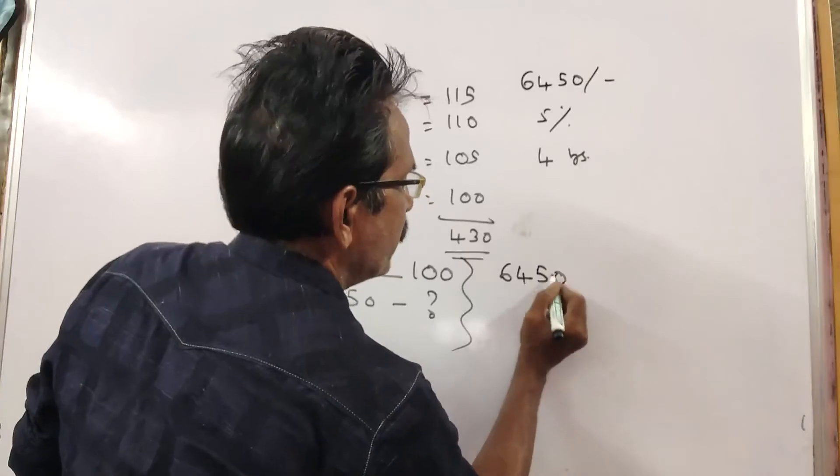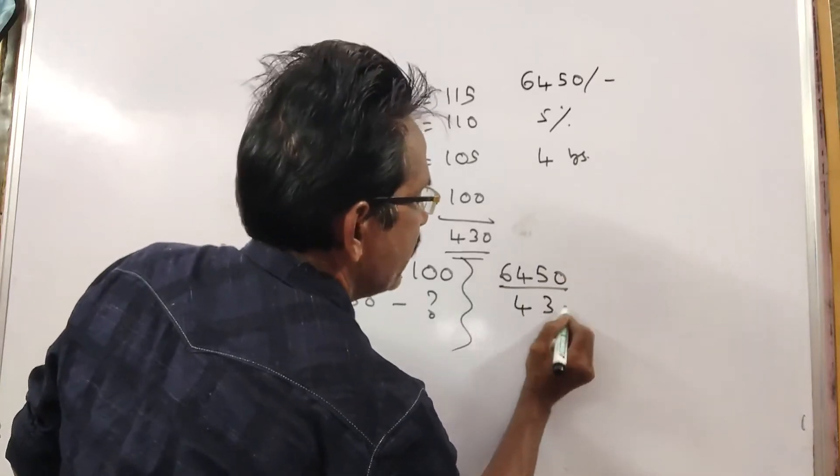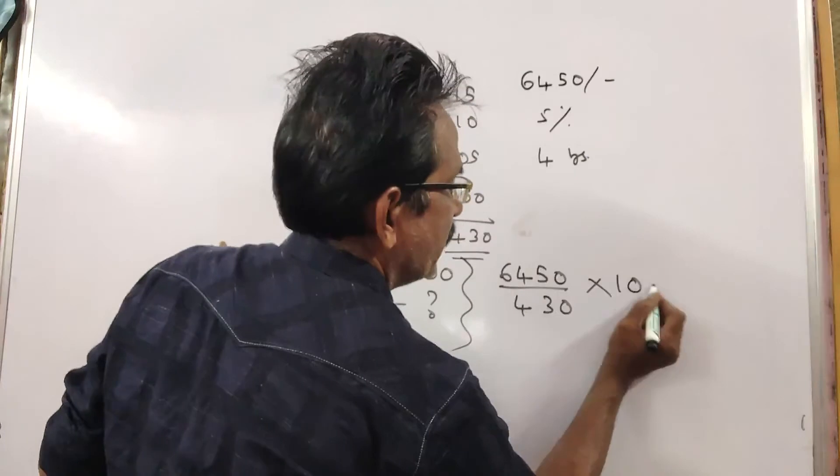Rs. 6450 divided by Rs. 430, into Rs. 100.